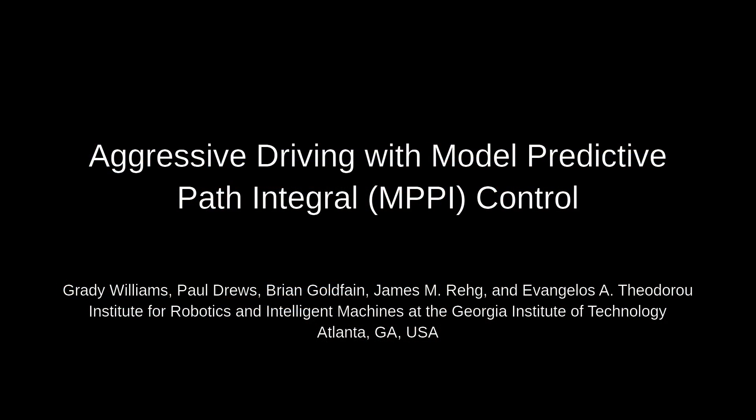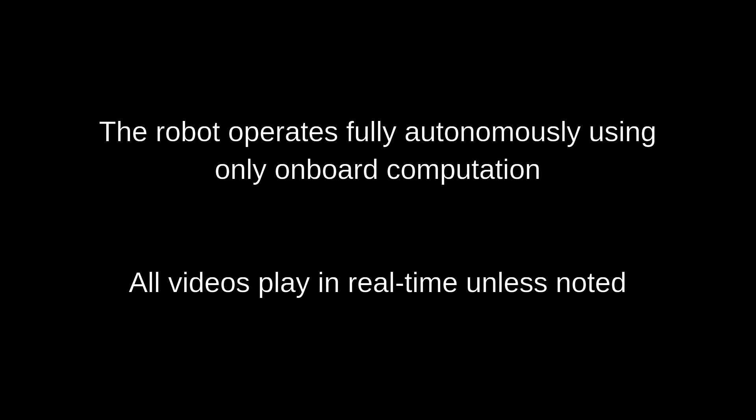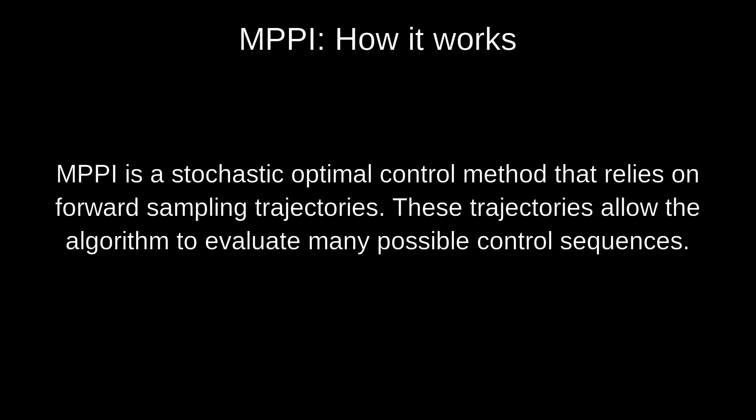This video presents the MPPI algorithm and experimental results on the Autorally platform at the Georgia Tech Autonomous Racing Facility. In all clips, the robot operates fully autonomously using only onboard computation at speeds approaching 20 miles an hour. MPPI, which stands for Model Predictive Path Integral Control, is a stochastic optimal control method that relies on forward sampling trajectories.